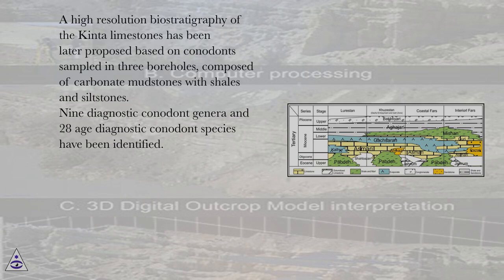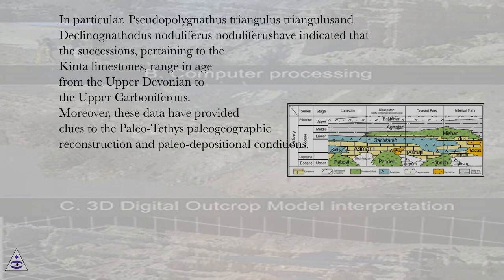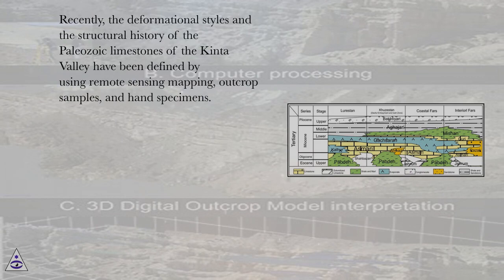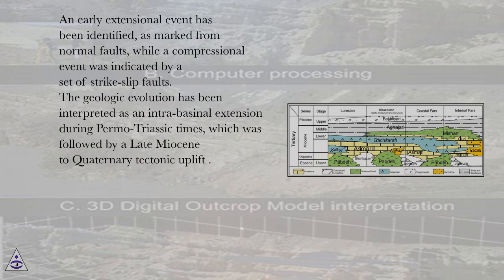Nine diagnostic conodont genera and 28 age-diagnostic conodont species have been identified. In particular, Pseudopolygnathus triangulus triangulus and Declinognathodus noduliferus noduliferus have indicated that the successions pertaining to the Kinta limestones range in age from the upper Devonian to the upper Carboniferous. These data have provided clues to the Paleotethys paleogeographic reconstruction and paleo-depositional conditions. Recently, the deformational styles and structural history of the Paleozoic limestones of the Kinta Valley have been defined using remote sensing mapping, outcrop samples, and hand specimens. An early extensional event marked by normal faults and a compressional event indicated by strike-slip faults were identified. The geologic evolution has been interpreted as intrabasinal extension during Permo-Triassic times, followed by a late Miocene to Quaternary tectonic uplift.